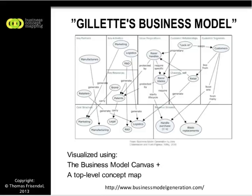If you go down to the bottom, you have revenue streams from sales of handles once per customer, and sales of blades many times per customer. And you have the cost structure consisting of marketing costs, manufacturing costs, legal costs — a lot of those — research and development costs, and logistics costs. This is a very clear picture of what the Gillette business model, as it is being told, is all about.